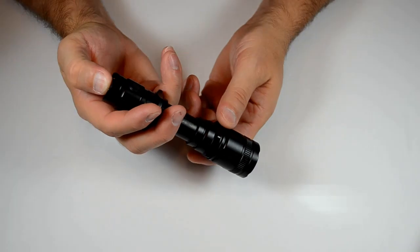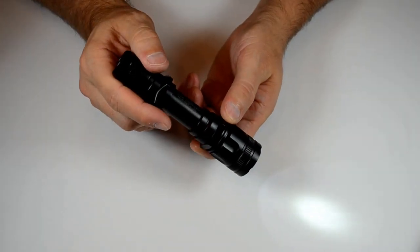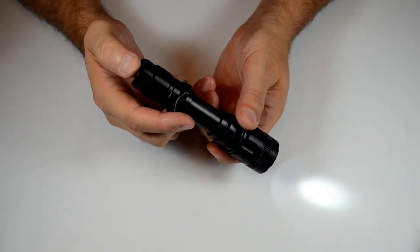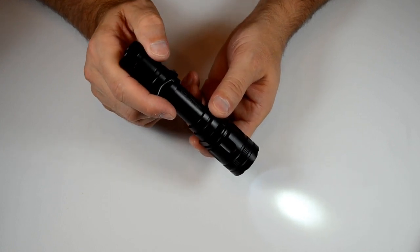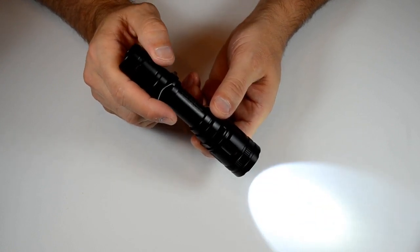To turn the light on, you operate it - turn it on with your forward momentary clicky, and then you can operate it with the side clicky.